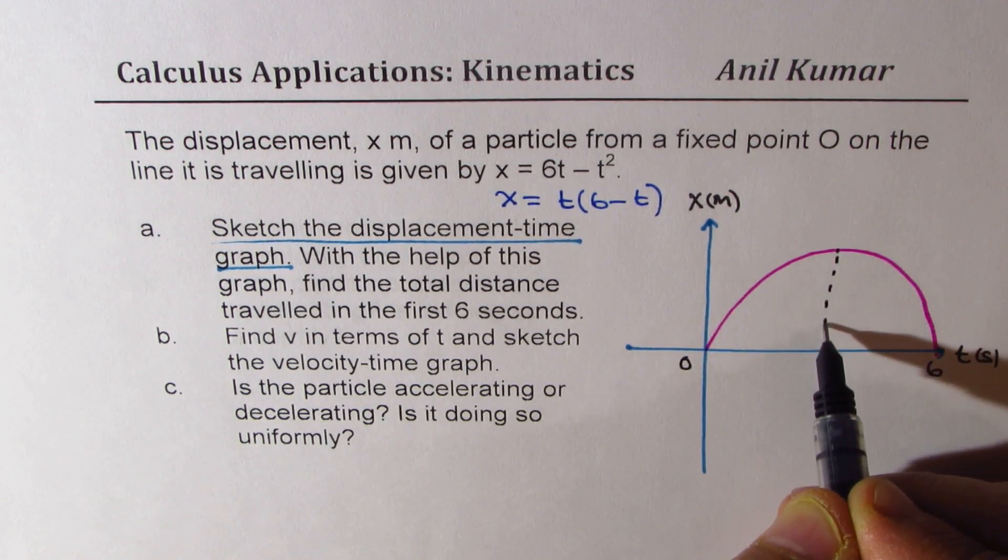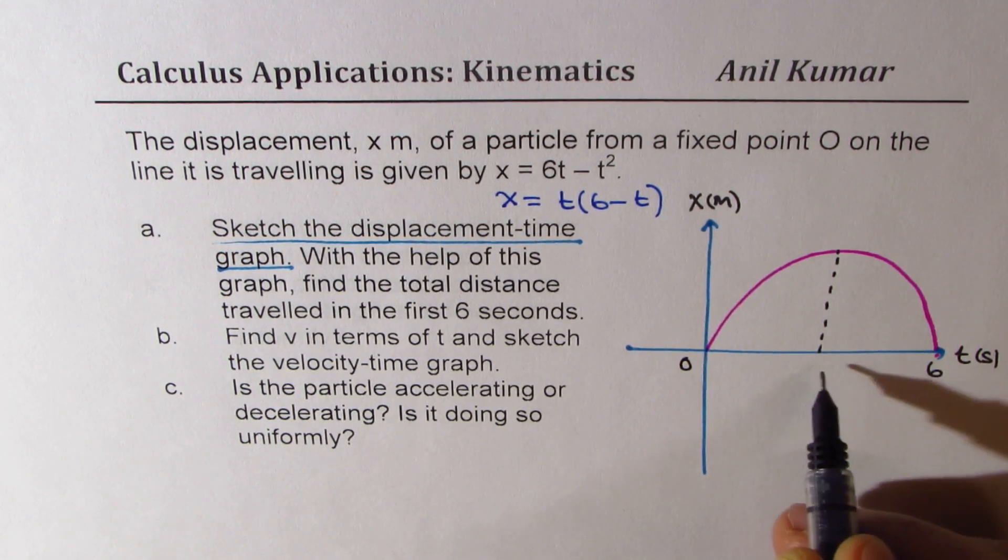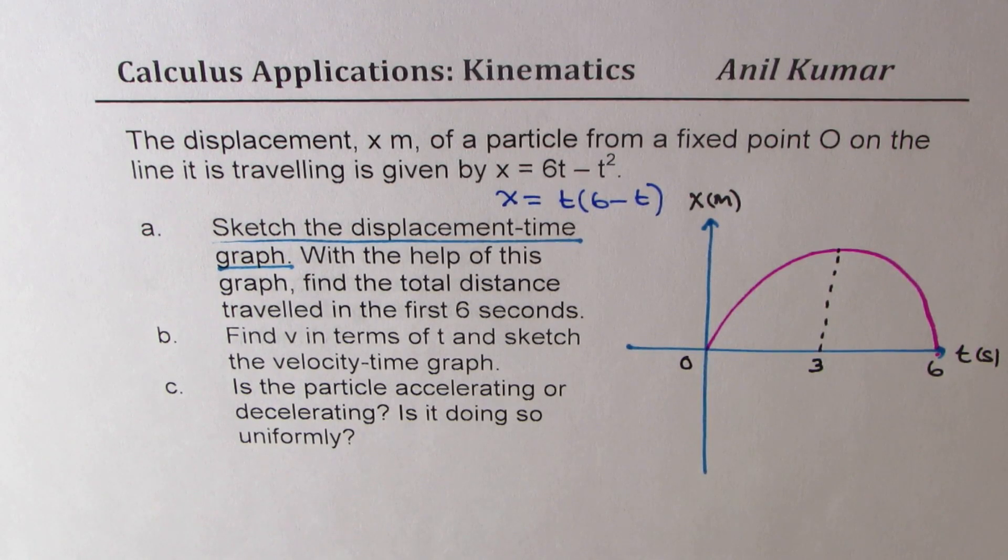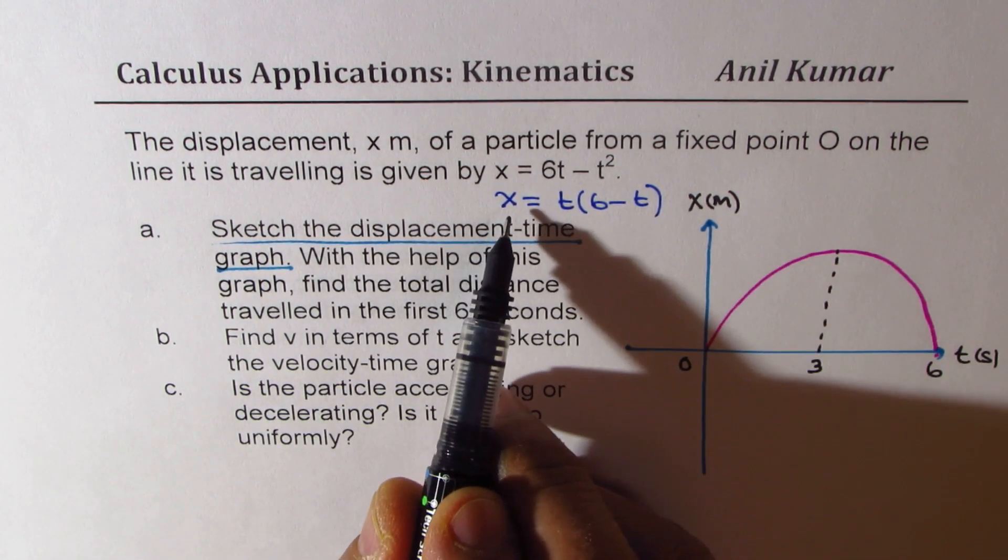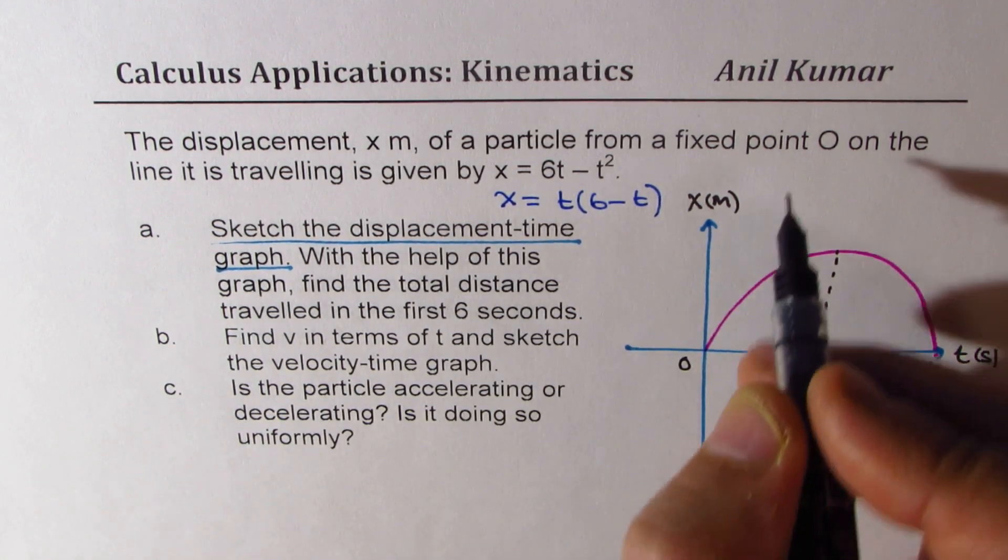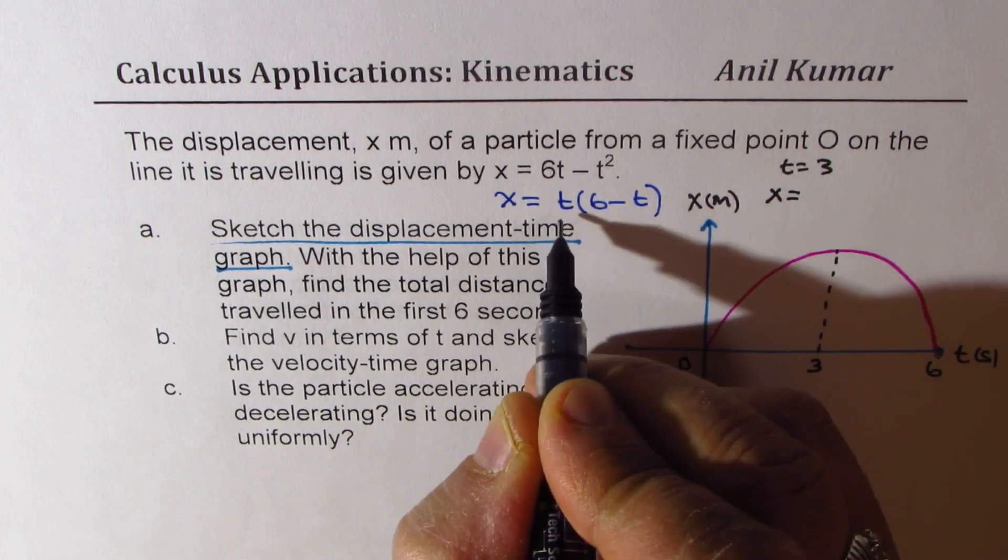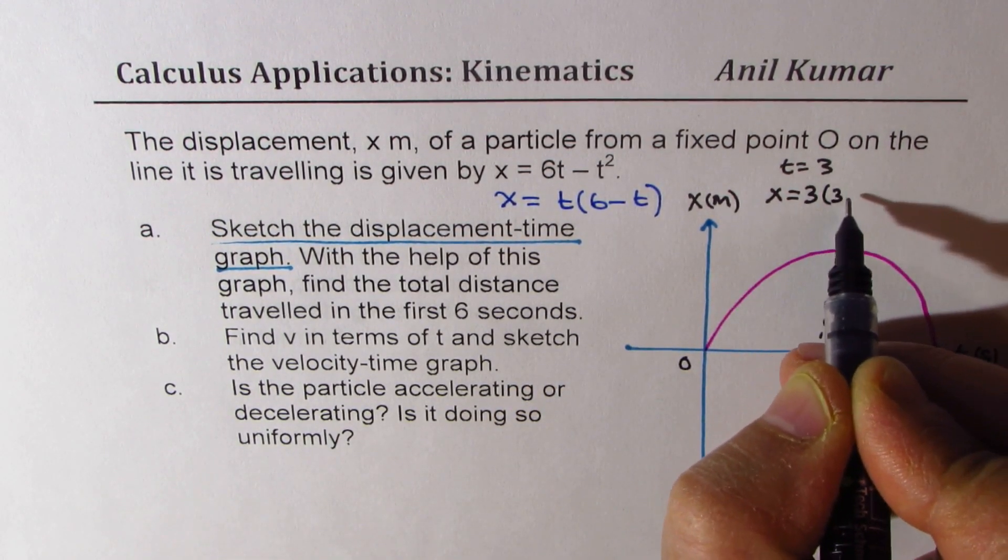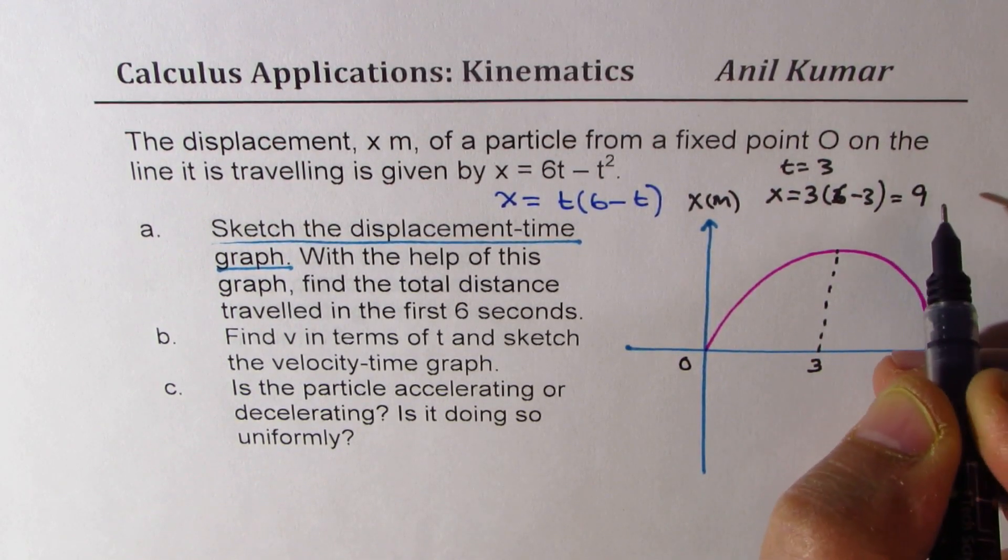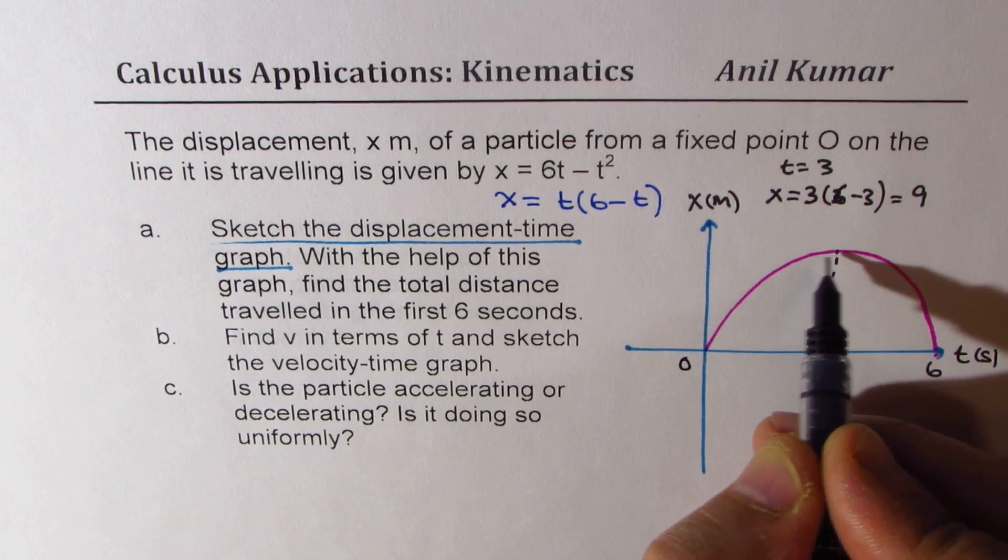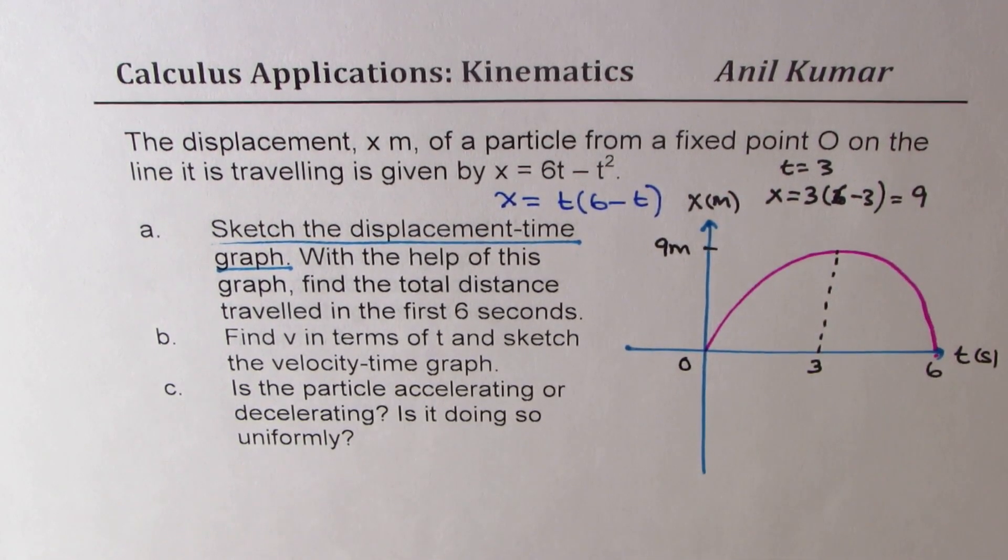Now the maximum value will be right in the middle. So that will be the value at t equals 3, the axis of symmetry for this particular parabola. So let's find x for t equals 3. At t equals 3, x is equal to, we'll substitute 3 here, 3 times 6 minus 3 which is 3. So that gives us 9 meters. So we get this value as 9 meters.